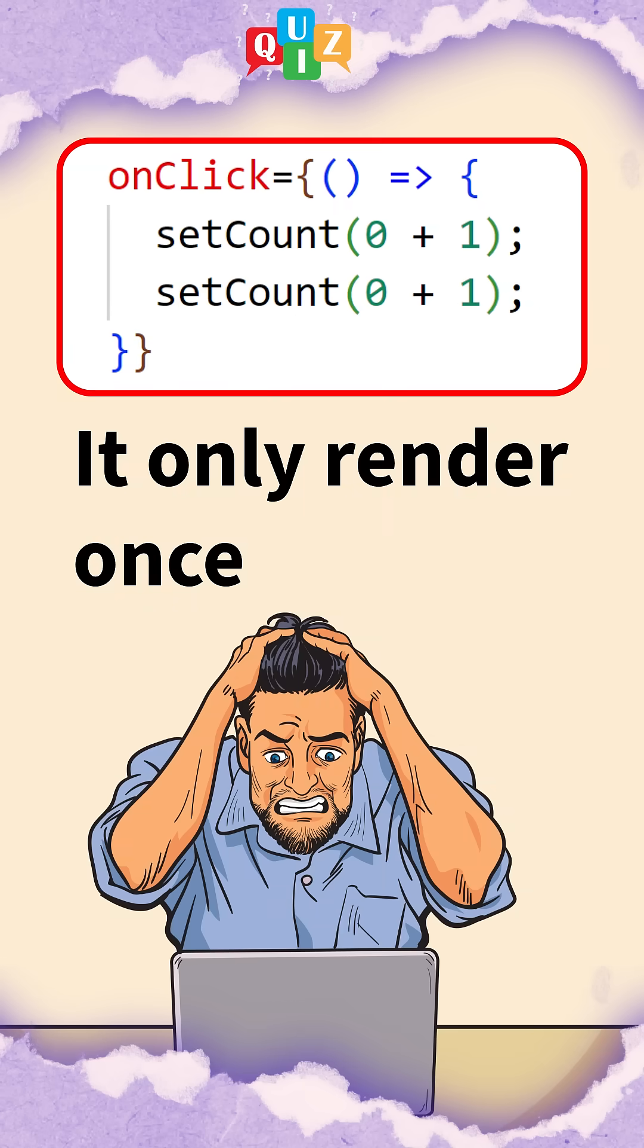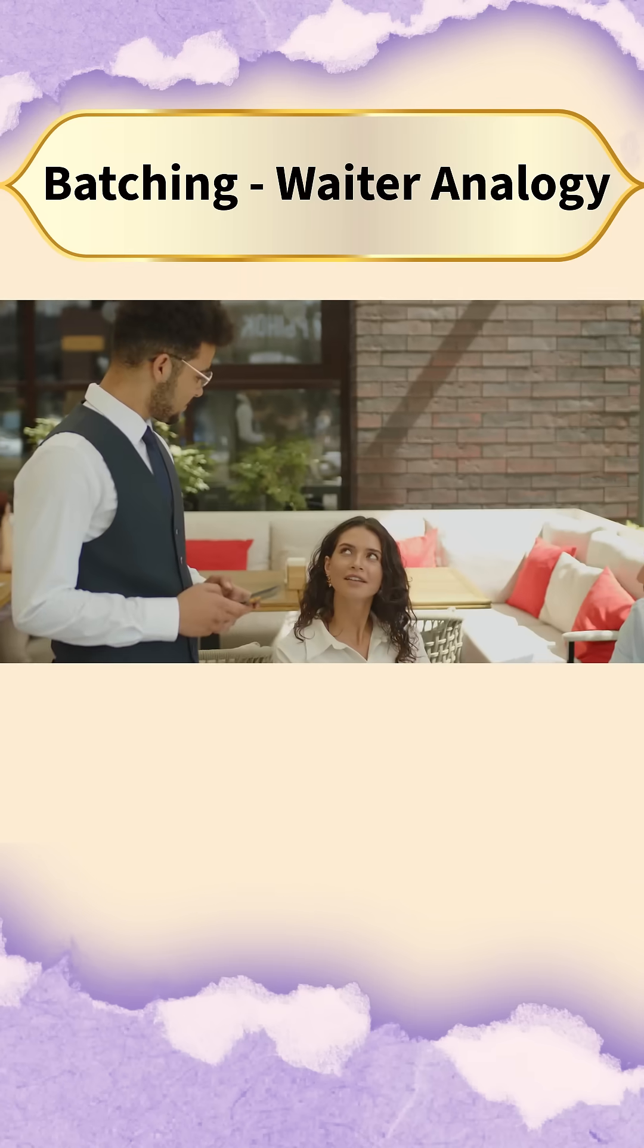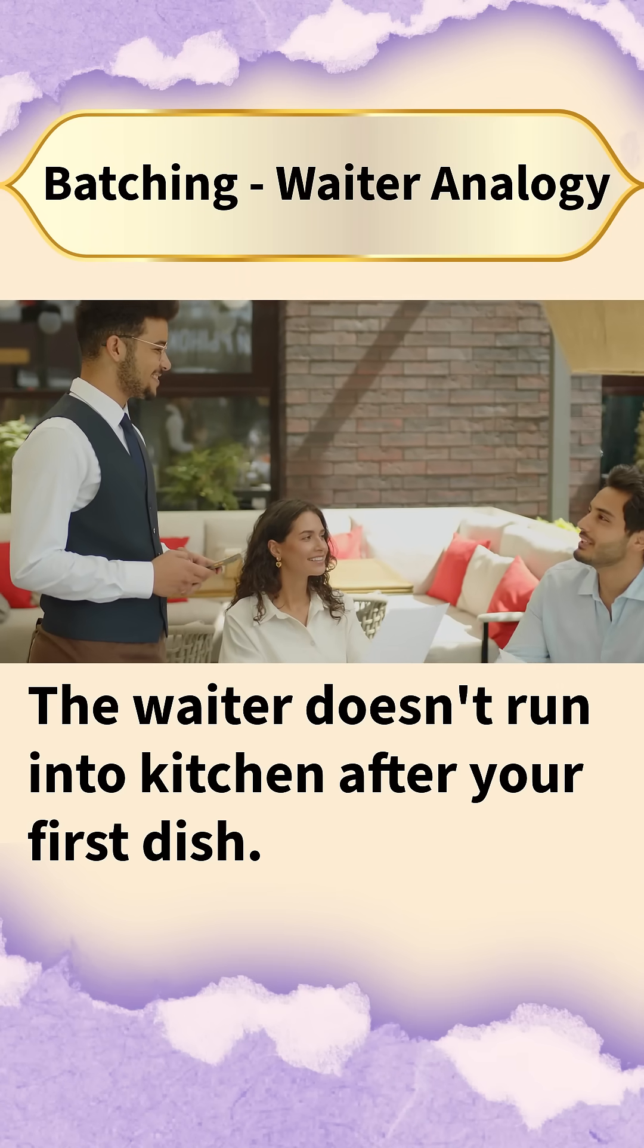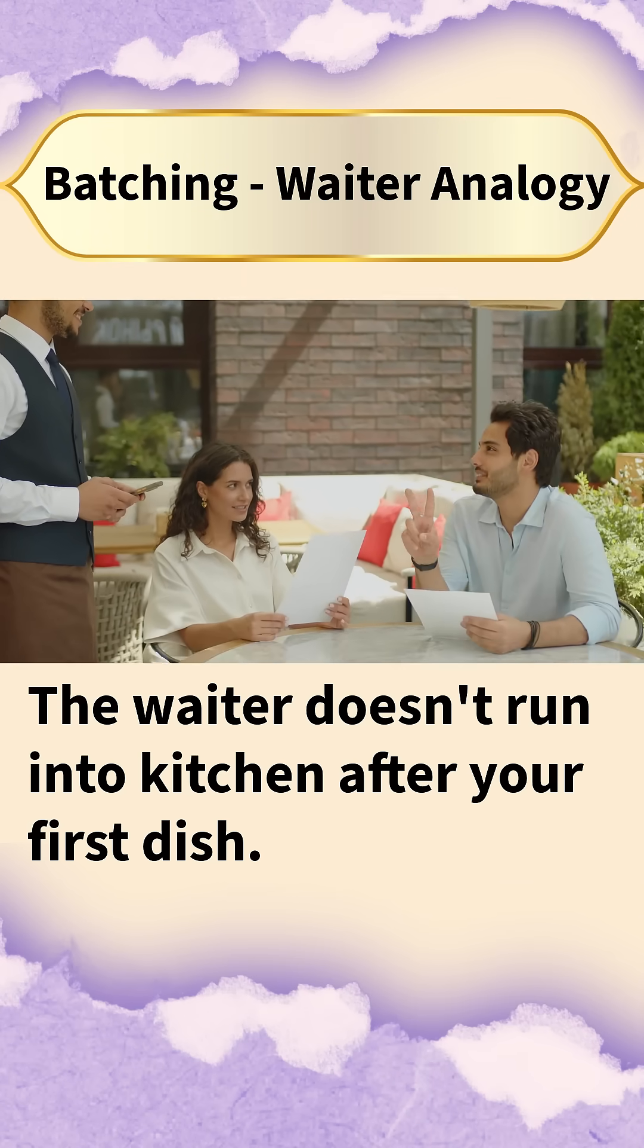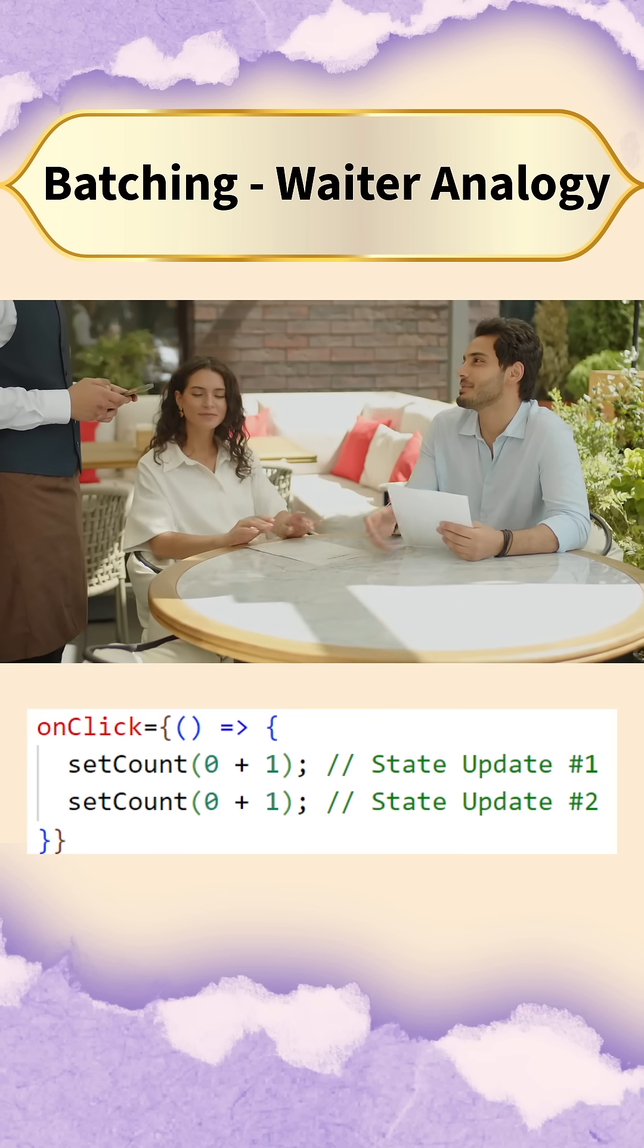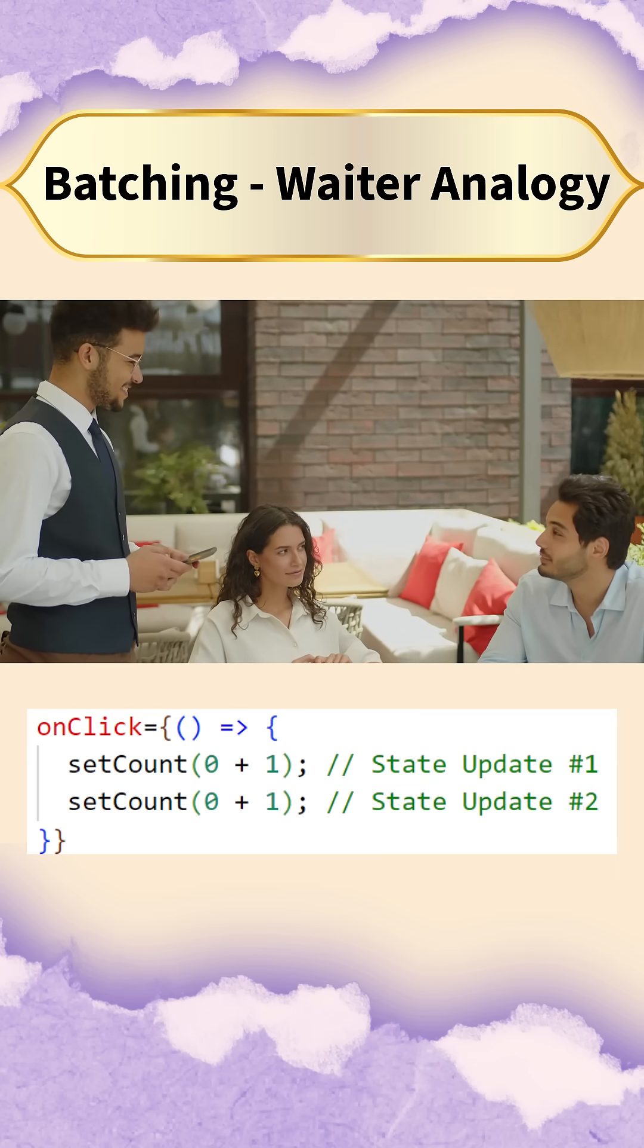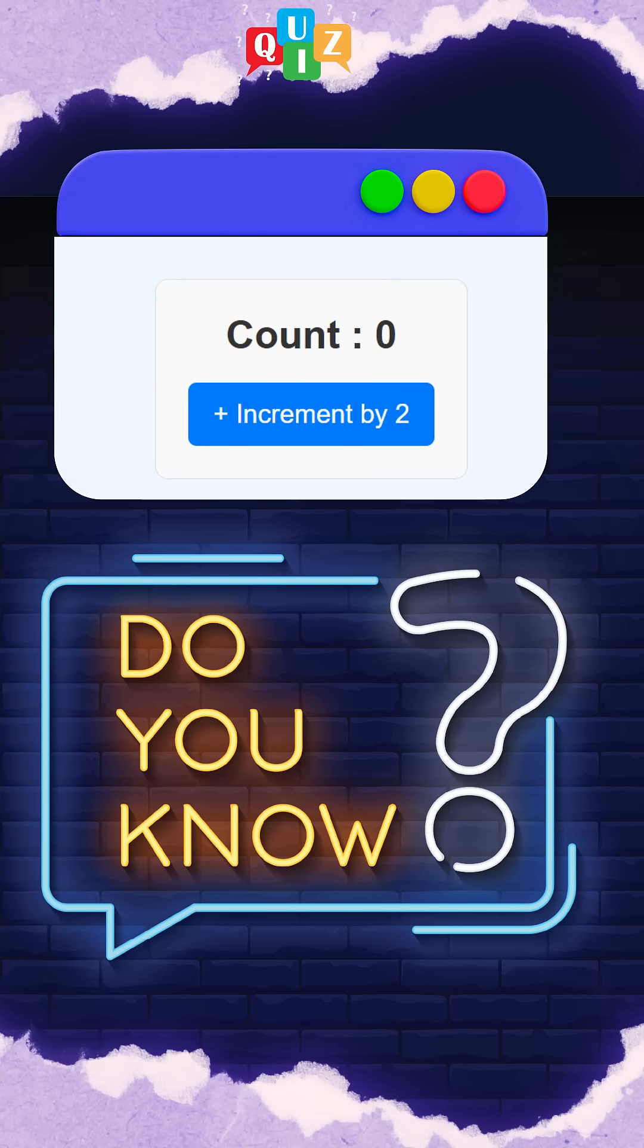This is due to batching. Think of React like a waiter taking your order at a restaurant. The waiter doesn't run into the kitchen after your first dish. They wait for your entire order. You can think of this like all state updates in the event handler. This batching makes React faster by avoiding unnecessary re-renders. But what's the solution?